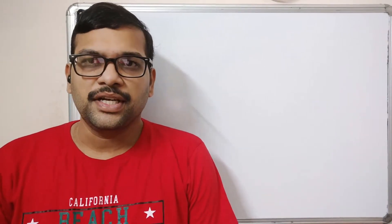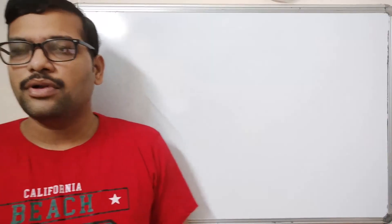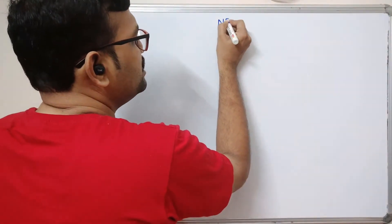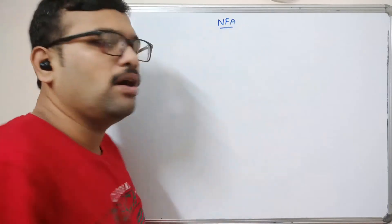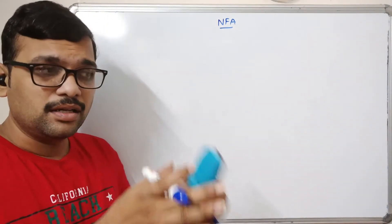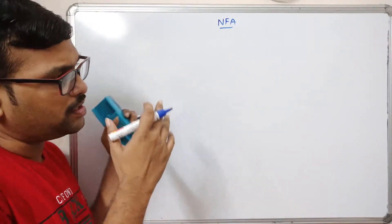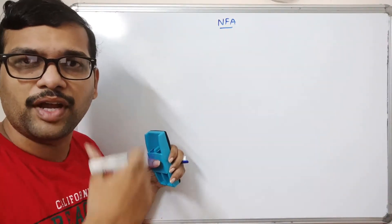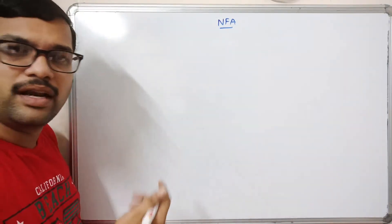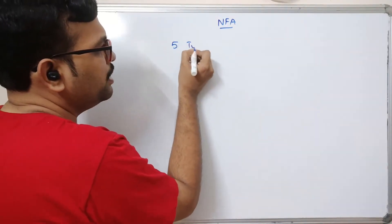Hello friends, welcome back to our channel. In today's session we'll discuss NFA, which means Non-deterministic Finite Automata. We have seen the introduction in the previous session covering the types of finite automata — DFA and NFA. We'll recall the definition once again. NFA is also a 5-tuple.